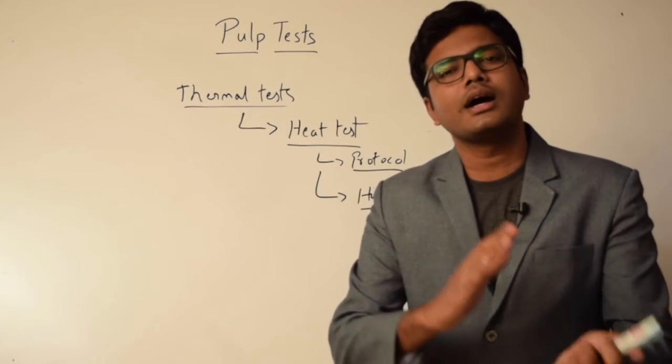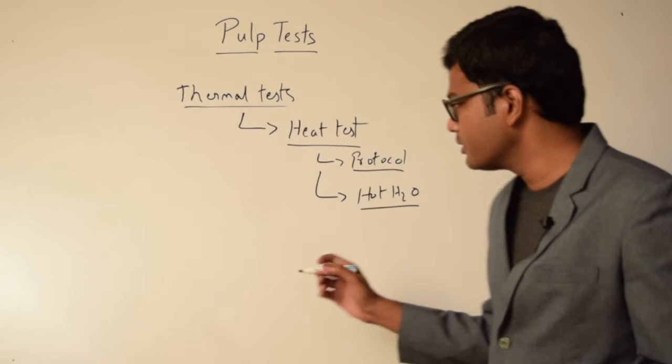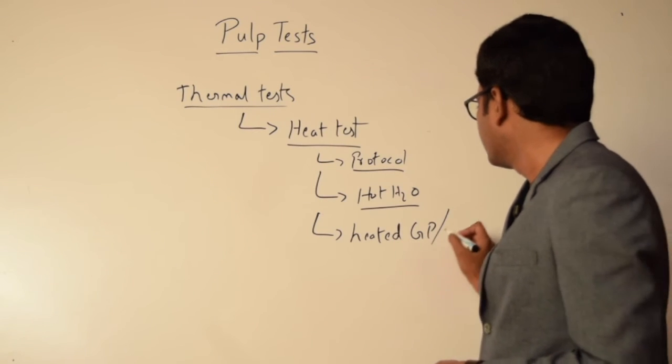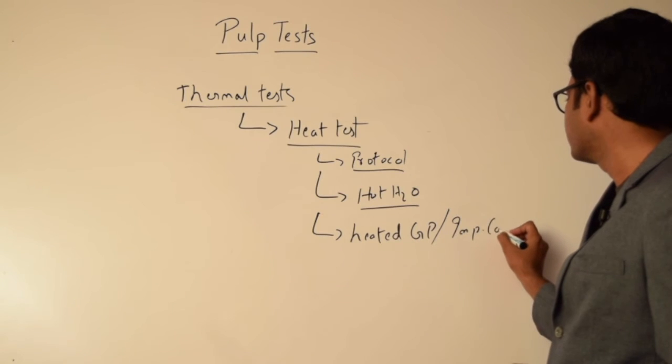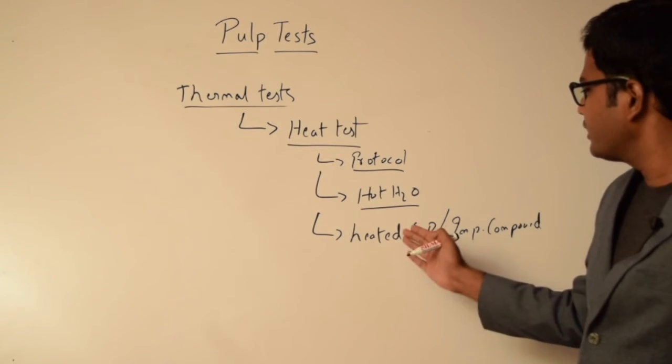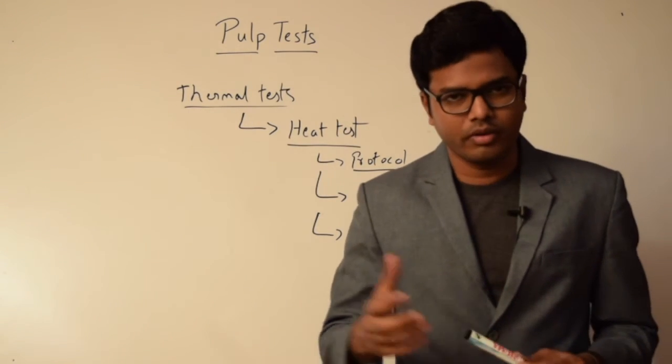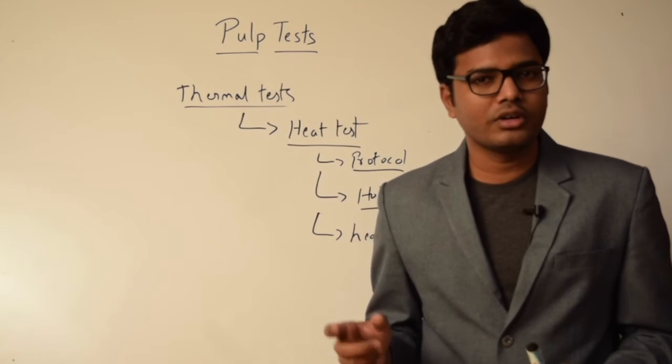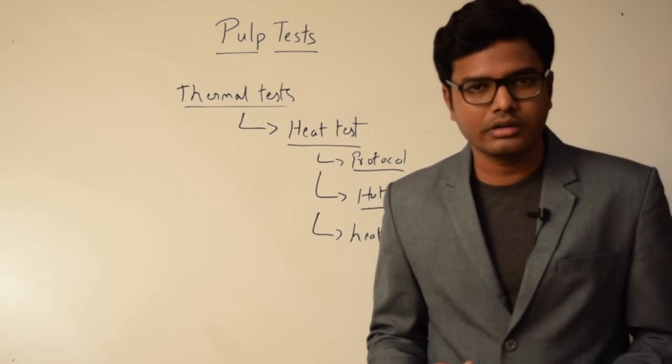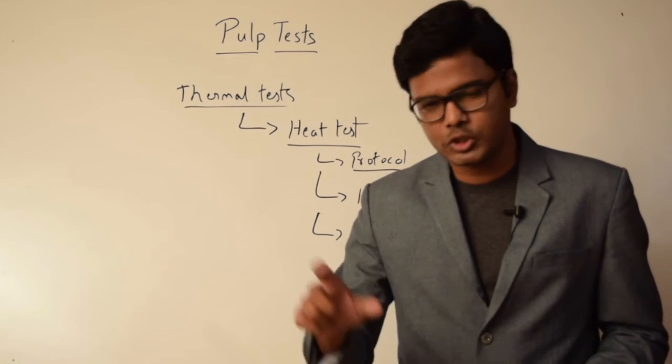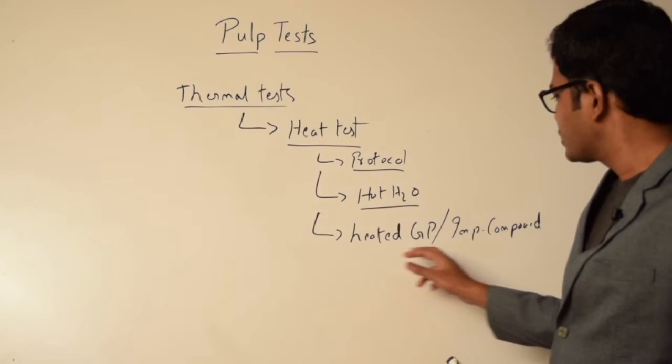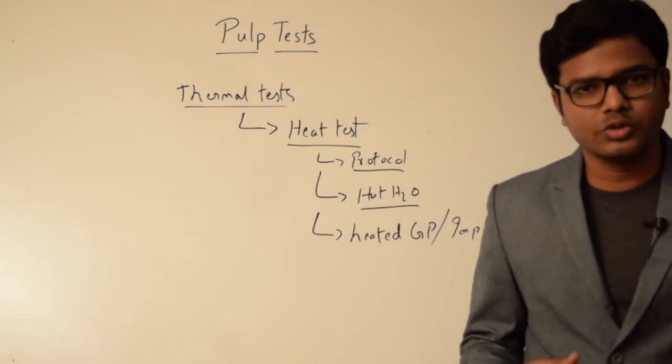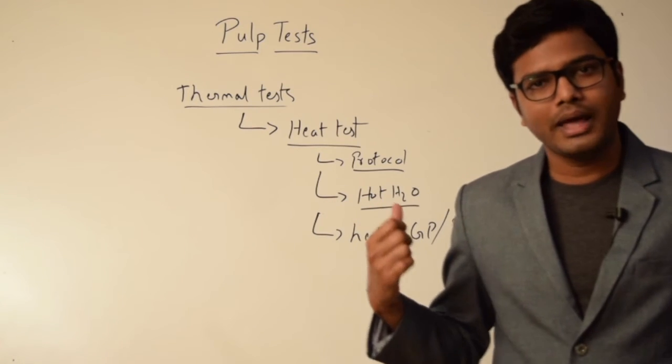We also have heated gutta percha or impression compound. These can be applied to the mid-facial region of the tooth in question. Always keep in mind that we need to test the adjacent as well as contralateral tooth to obtain baseline data or baseline response. Care has to be taken because these materials tend to stick onto the tooth, so we apply a layer of lubricating solution before applying them.